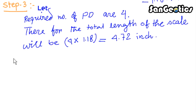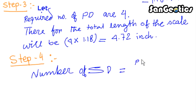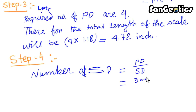Step 4: number of secondary divisions equals primary division divided by one secondary division, which equals five miles divided by one mile, equals five.